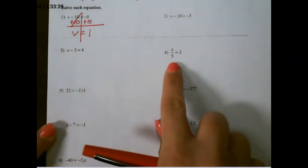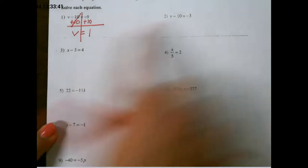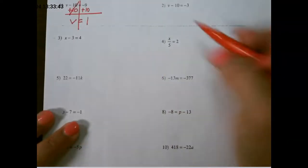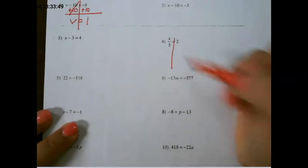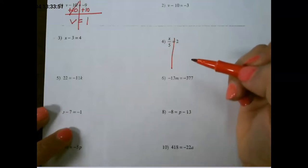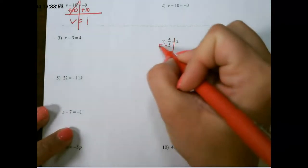Let's skip down to number 4 here since these are both also subtraction. So again, draw your line through the equal sign to create two sides. This says x divided by 5. So the inverse or opposite of division is going to be multiplication.